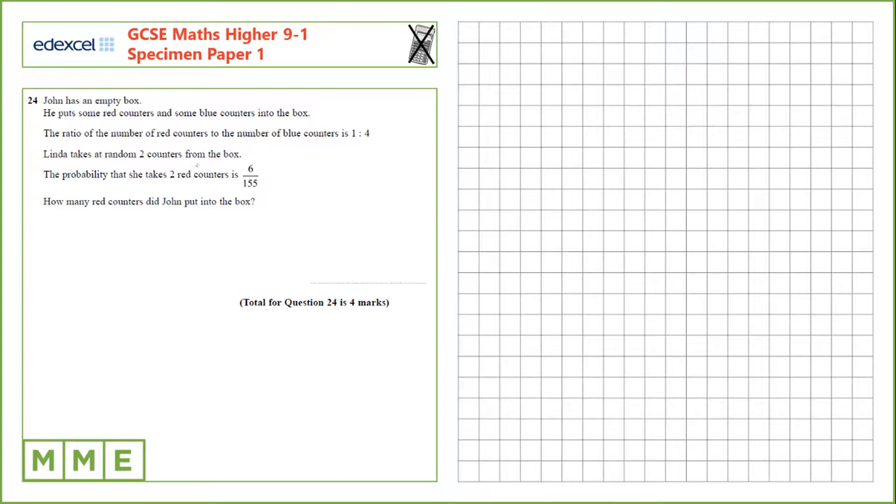Linda takes at random two counters from the box and the probability that she takes two red counters is 6 over 155. How many red counters did John put into the box?